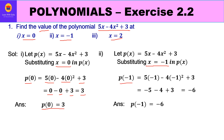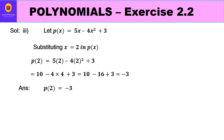Now replacing x by -1: p(-1) = 5(-1) - 4(-1)² + 3. Here 5×(-1) = -5, and (-1)² = 1 so -4×1 = -4, plus 3. That gives -5 - 4 + 3 = -6. So the value of the polynomial at x = -1 is -6.